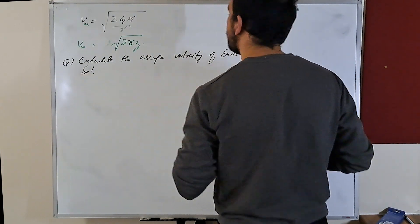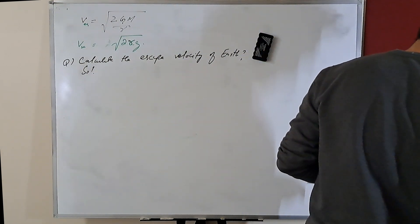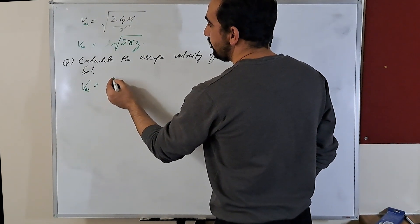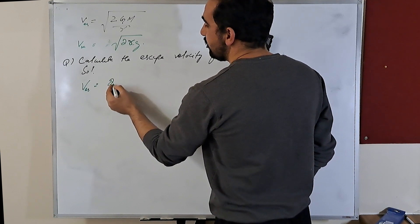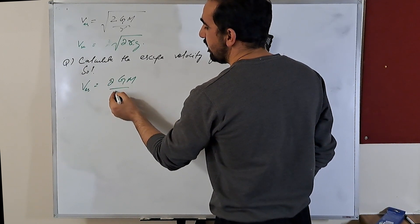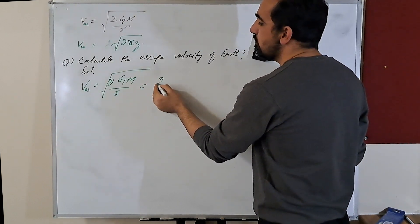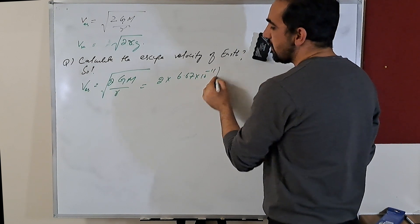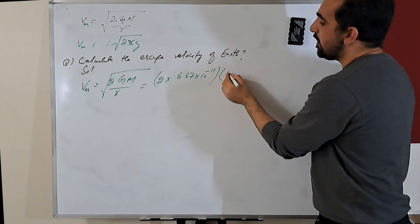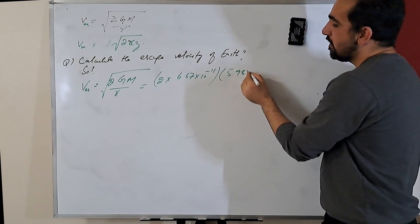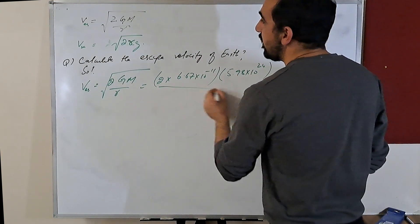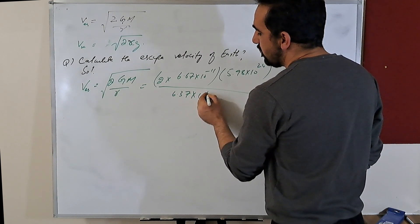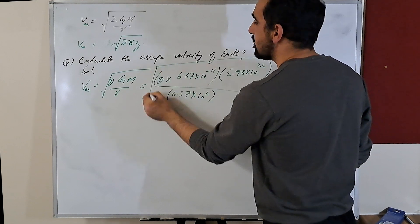Calculate the escape velocity of Earth solution. Since v_escape is equal to square root of 2GM divided by r, so what do we get? 2 into 6.67 times 10 to the power minus 11, and mass of Earth is 5.98 times 10 to the power 24 divided by r is 6.37 into 10 to the power 6, and whole square root.